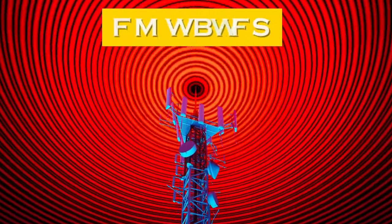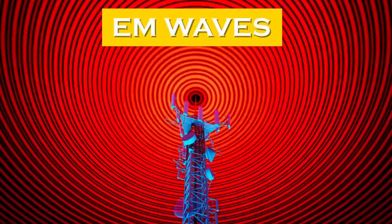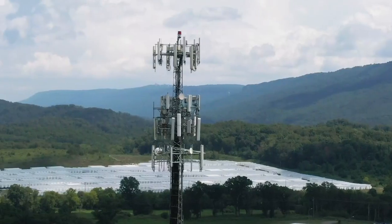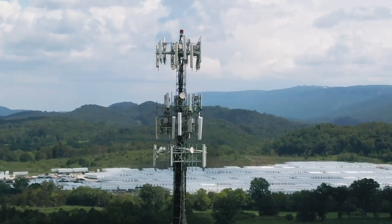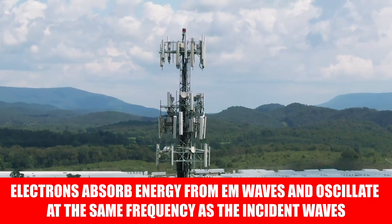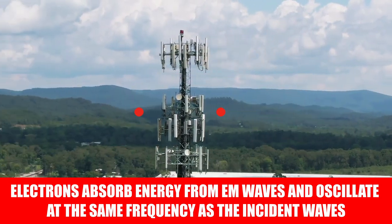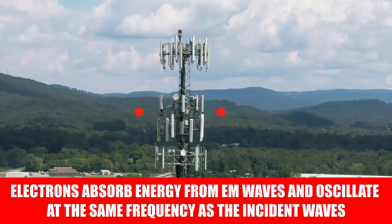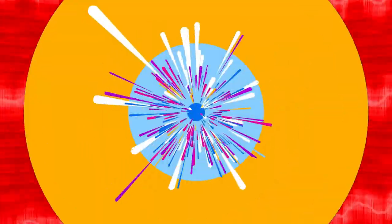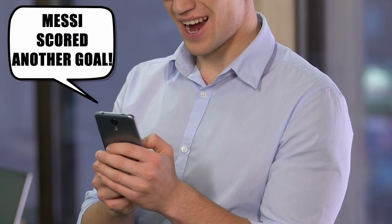Data is transmitted in the form of EM waves. The receiver contains a similar conductor. When EM waves strike the antenna, the electrons absorb energy and start oscillating at the same frequency as that of the incident waves. This electronic oscillation creates an AC current in the receiving antenna, which is then converted to a usable form, like a text message.